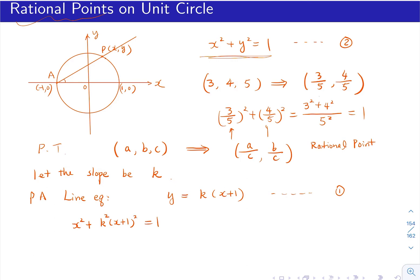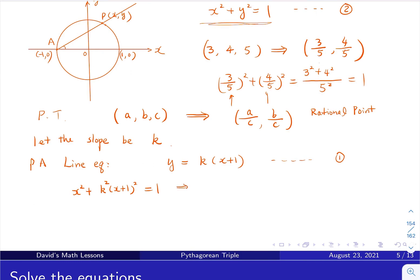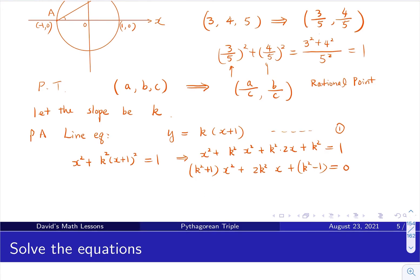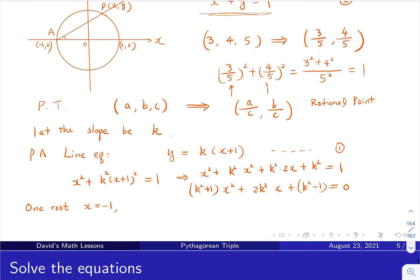We plug this line equation into x squared plus y squared equals 1. Substituting y = K(x+1), we get x squared plus K squared times (x+1) squared equals 1. Expanding and combining terms gives (K squared + 1)x squared + 2K squared x + (K squared − 1) equals 0. This is a quadratic equation, and we know one root is x equals negative 1.